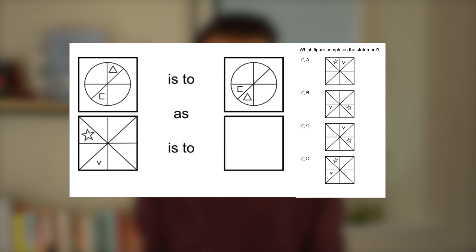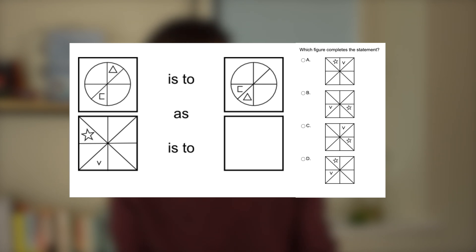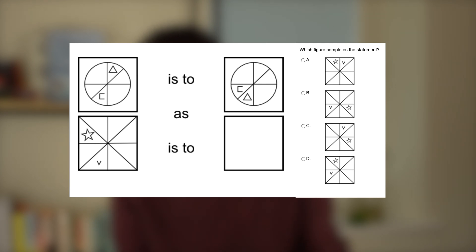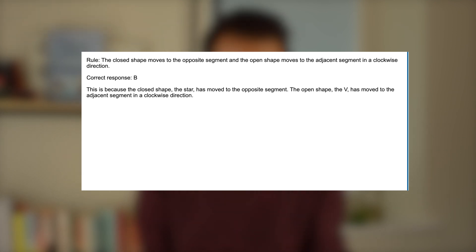Let's look at another example — a Type 3 'this is to that' question. The left-hand shape is transformed to the right-hand shape: a triangle moves to the opposite segment, and a C-shaped line moves to the segment clockwise to its left. Applying this to the bottom-left image, we'd expect the star (the closed shape) to go to the opposite side, and the V (the open shape) to move one segment to its left clockwise. Looking at the answer options, B immediately matches the rule we've applied — and indeed B is the correct answer.